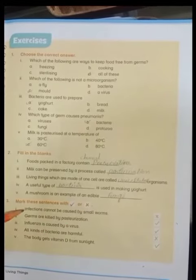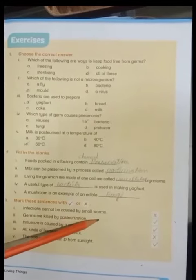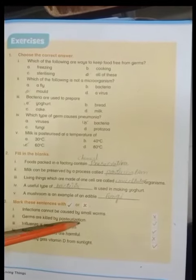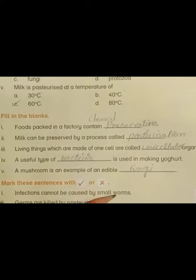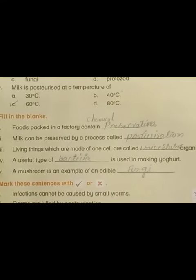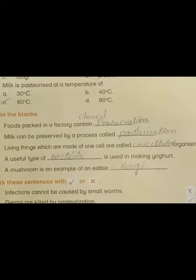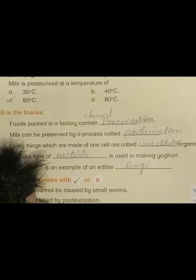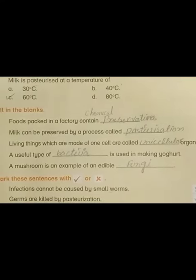Third question is mark these sentences with tick or false. Infections cannot be caused by small worms - wrong. Germs are killed by pasteurization - tick. Influenza is caused by a virus - correct. All kinds of bacteria are harmful - wrong. The body gets vitamin D from sunlight - correct.